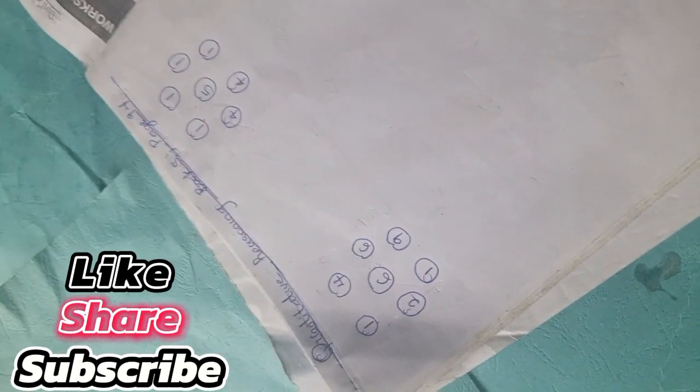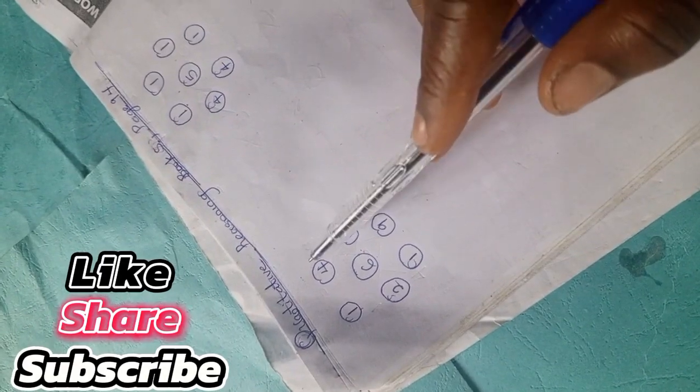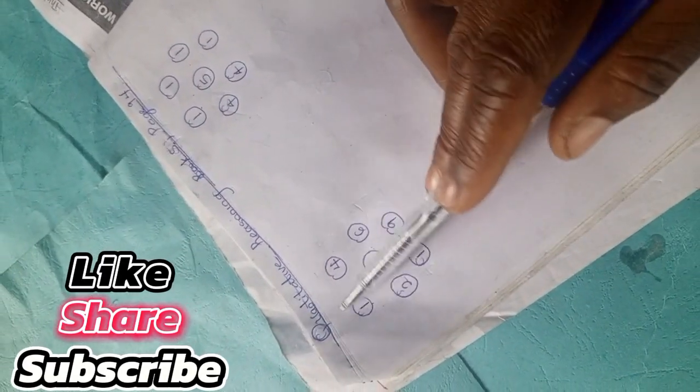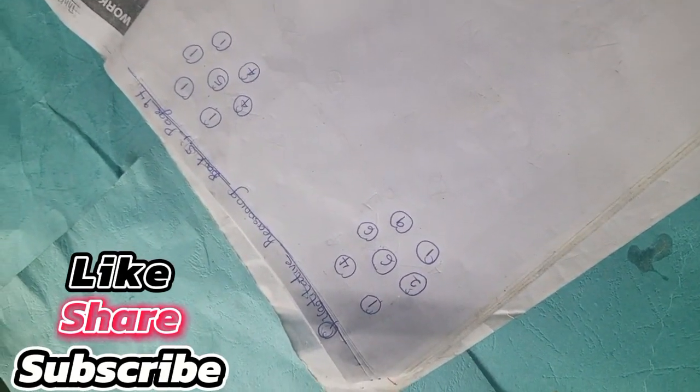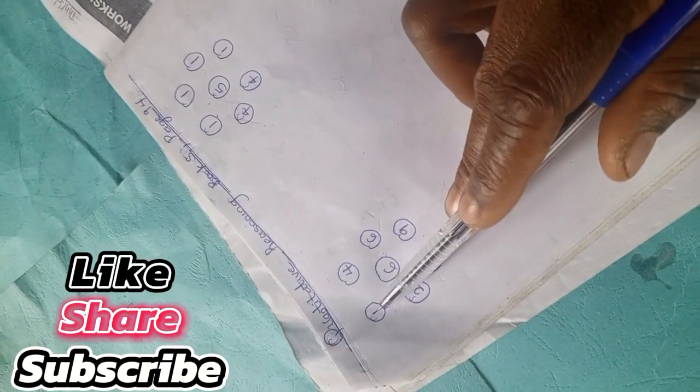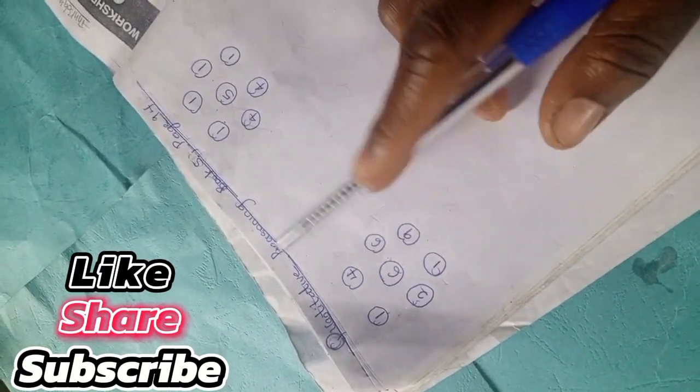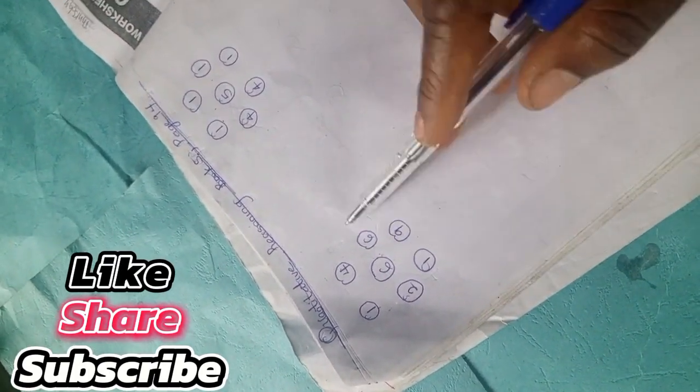The first numbers we have 1-4, so we're going to take it together as 14. The middle numbers we have 2-6-6, we're going to take as 266. And 1-9, we're going to take it as 19.